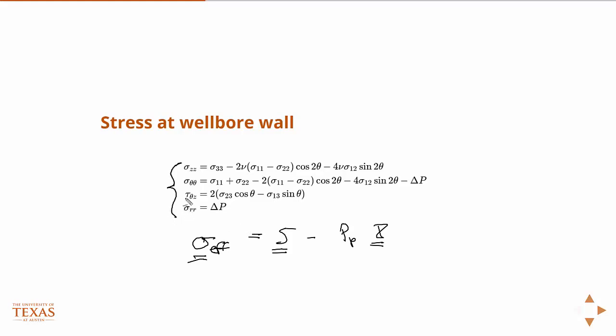Where then you have, for instance, your hoop stress, this would be your stress along the wellbore wall, tangential to the wellbore wall. So your hoop stress, for example, would be sigma theta theta.